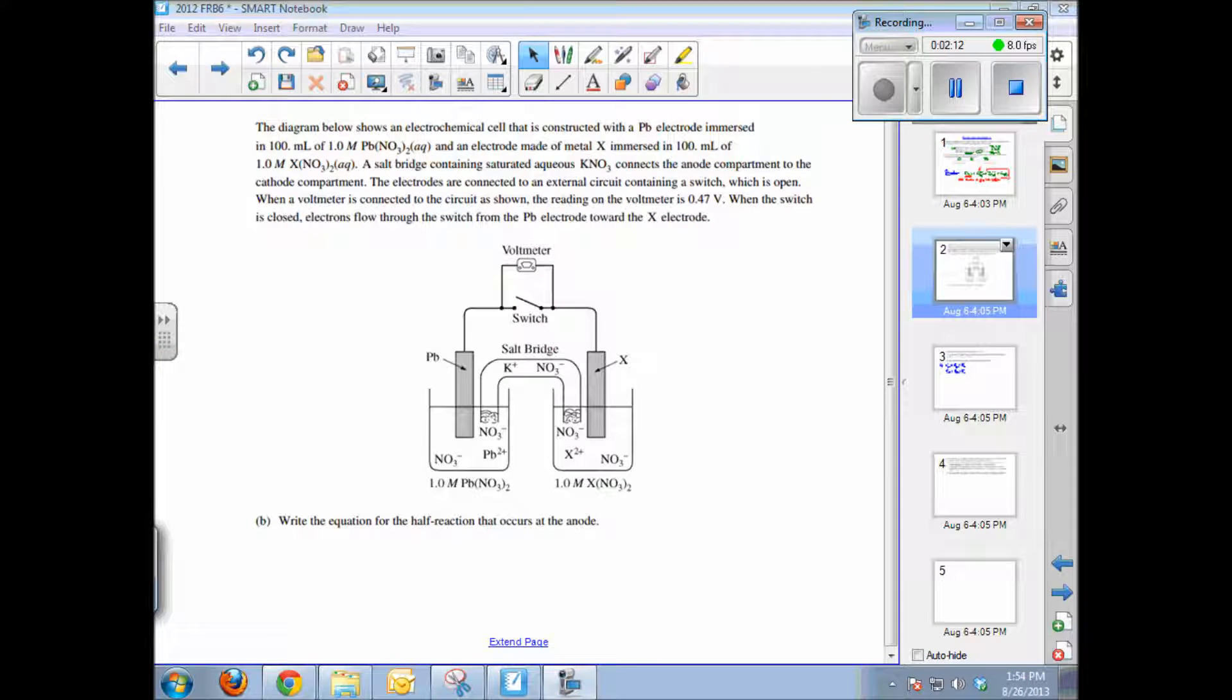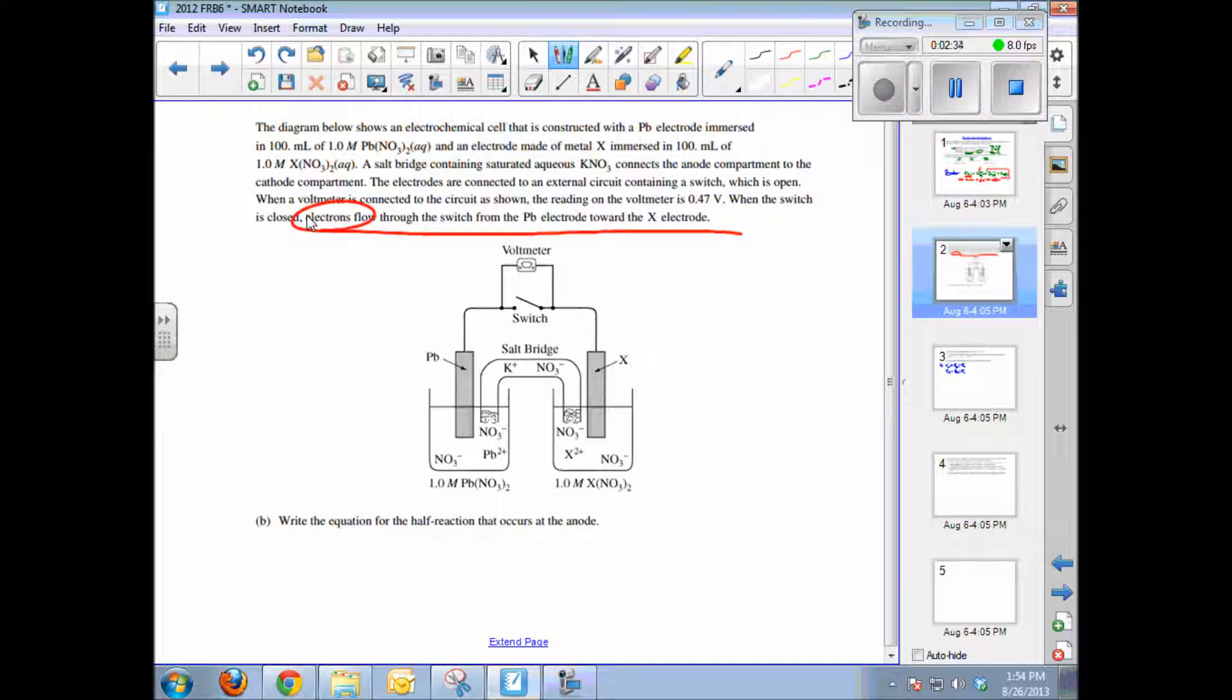Part B of this question shows an electrochemical cell that has a lead electrode in a solution of lead nitrate and the X electrode in a solution of X nitrate. Salt bridge is present. The electrodes are connected with a voltmeter, you get 0.47 volts, and electrons flow from the lead electrode toward the X electrode. So the question asks, write the equation for the half reaction that occurs at the anode.